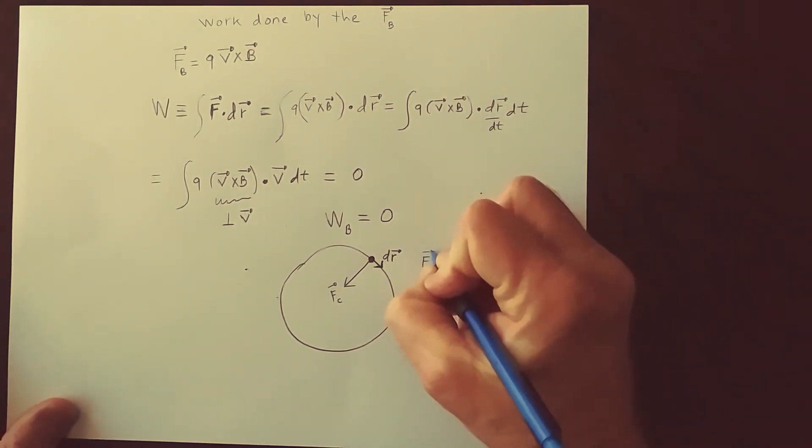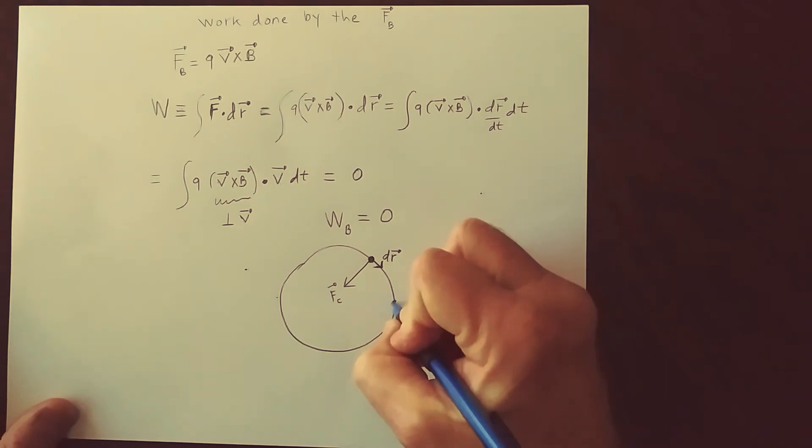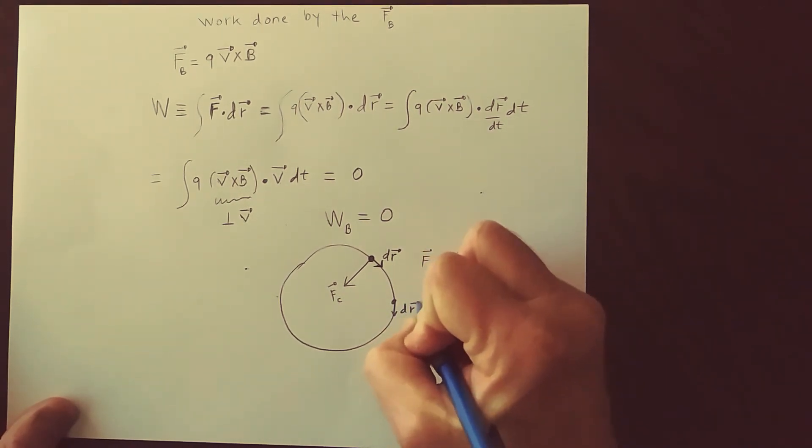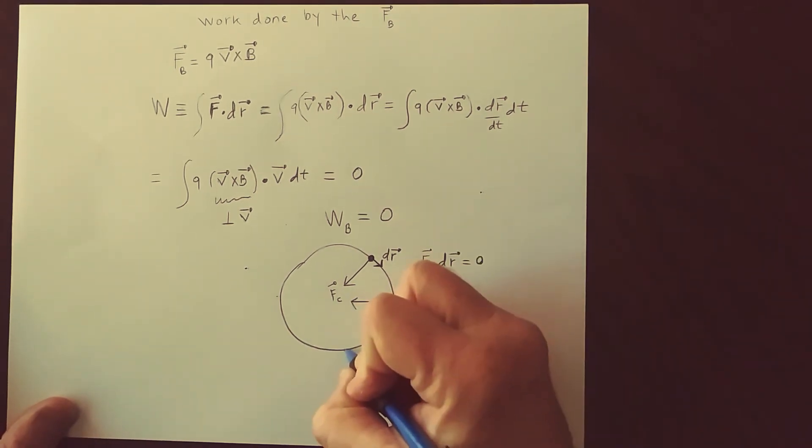And so you get at every single point along the path that F dot dr equals zero. We can see this at other locations. dr is tangent, and F is toward the center, and so on.